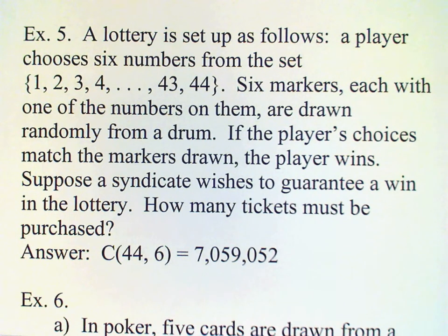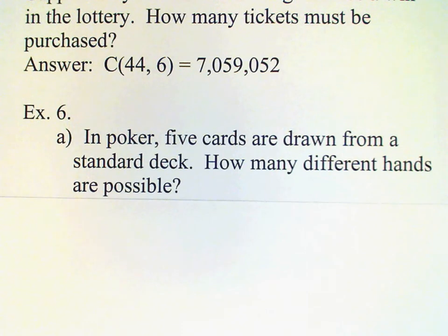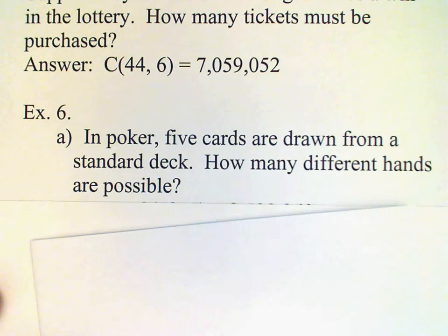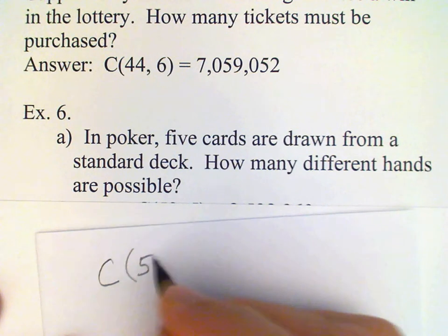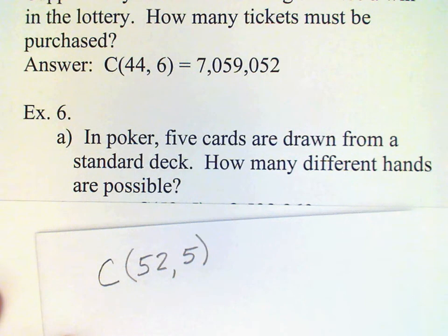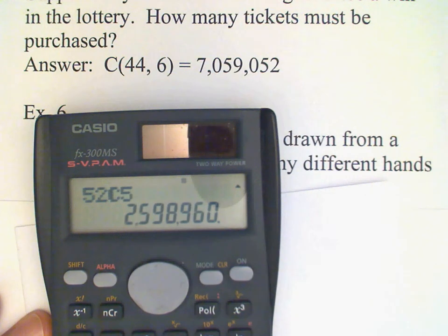Let's go back to card games. In poker, five cards are drawn from a standard deck — how many different hands are possible? A standard deck has fifty-two cards, and the order of the cards doesn't matter, so we're going to use combinations — you'd probably rearrange the cards in your hand anyway. We're choosing five from fifty-two, so C(52,5). The answer is two million five hundred ninety-eight thousand nine hundred sixty.